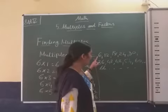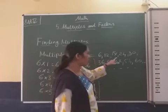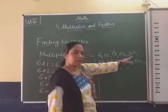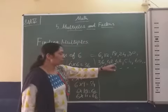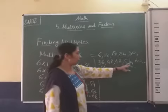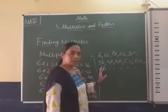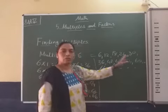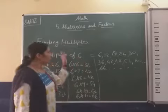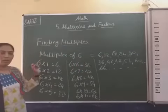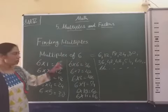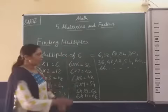So the multiples of 6 are: 6, 12, 18, 24, 30, 36, 42, 48, 54, 60, 66, and so on. When we find the multiples of 6, this is the answer.